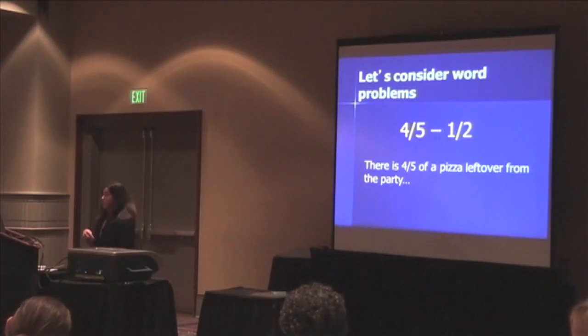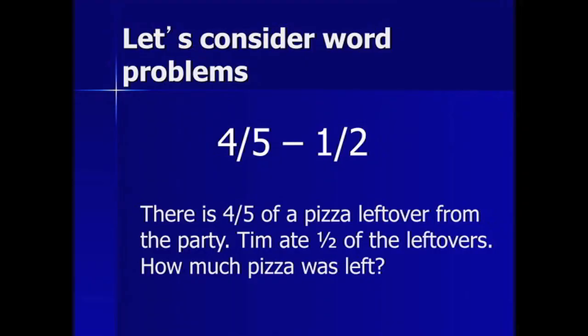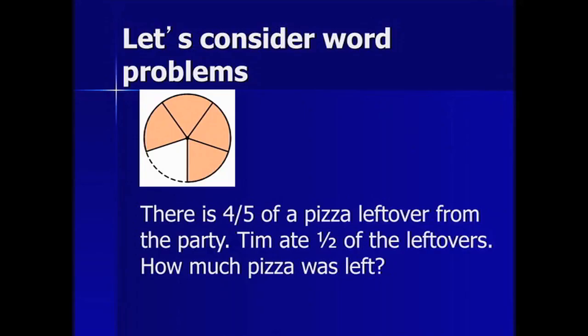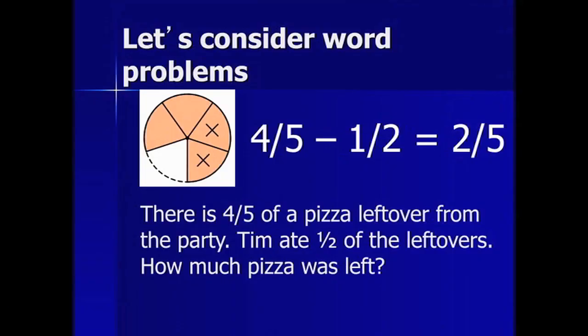Tim ate half — he ate half the leftovers. We need to develop this mental image. We know the standards say we need to develop a visual representation. So here's my four-fifths. Tim ate half of the four-fifths — how many pieces would that be? Two. Two of those pieces. And so we subtract two of those pieces, and we see that four-fifths minus one-half is equal to two-tenths.